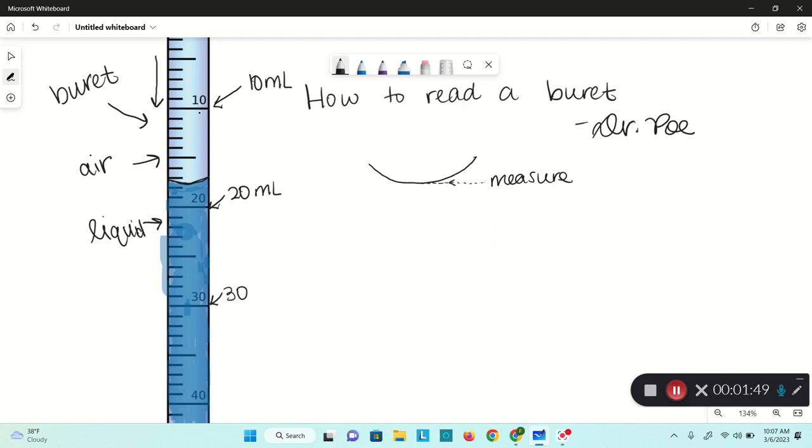The next thing is we've got to figure out what the different lines that aren't labeled are so that we can get a nice accurate measurement. Each burette is going to be just a little bit different, but it's nothing you can't figure out. It's just like reading a ruler.